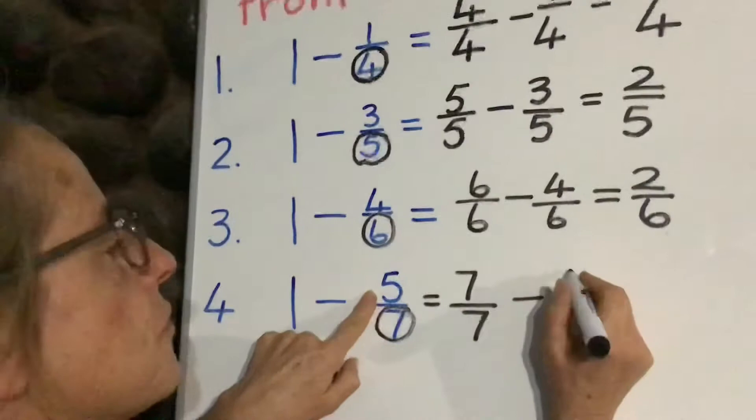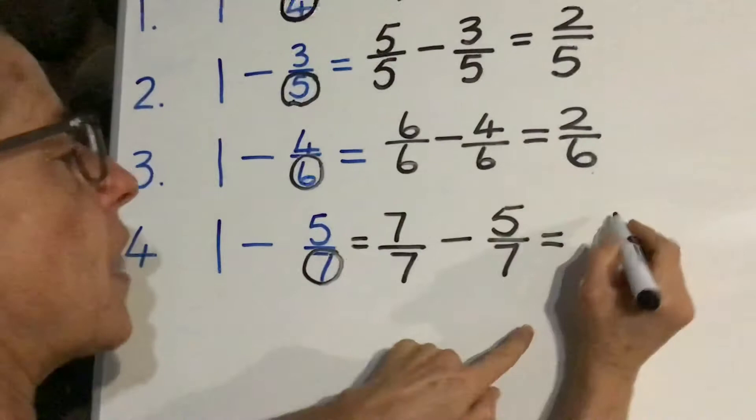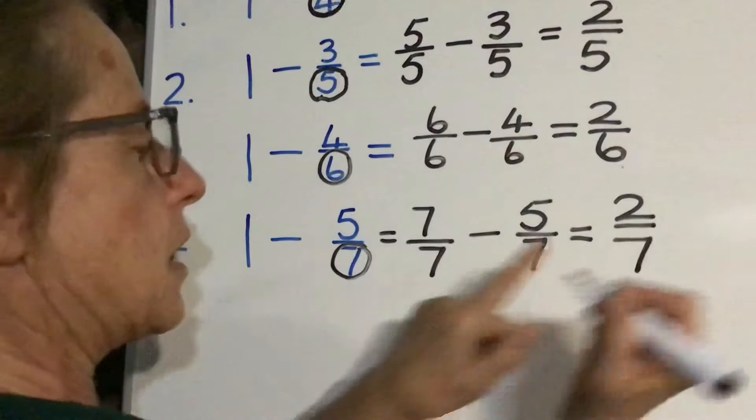And we're going to say seven minus five gives us two slices. Remember the denominator stays the same. It was two slices out of seven slices that are left. So now I want you to go and do the next activity in this just exactly in the same way.